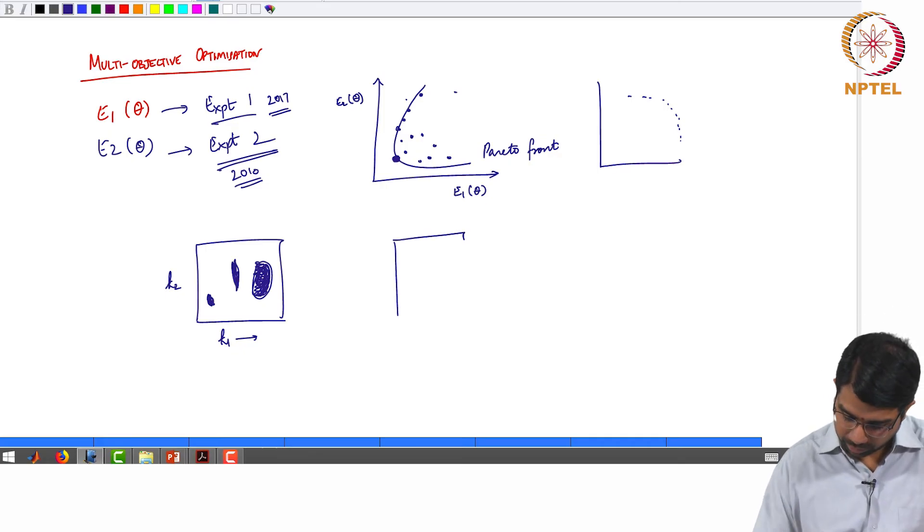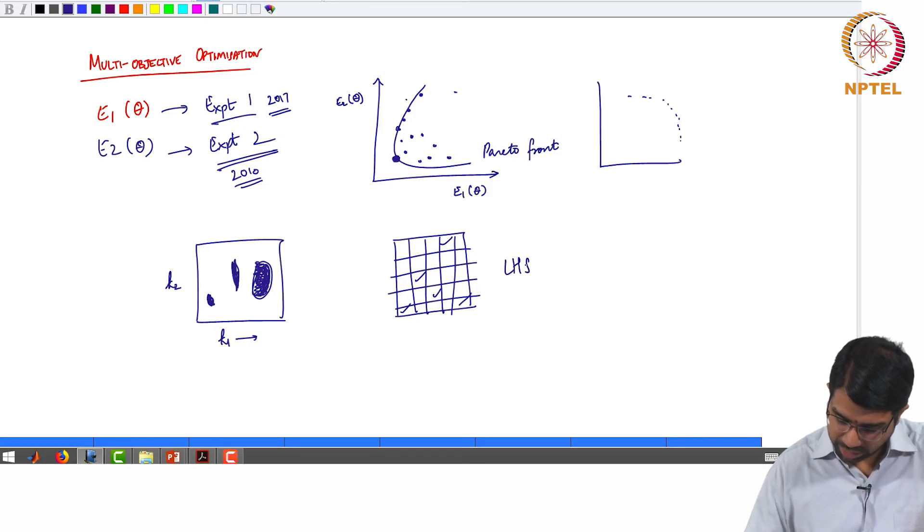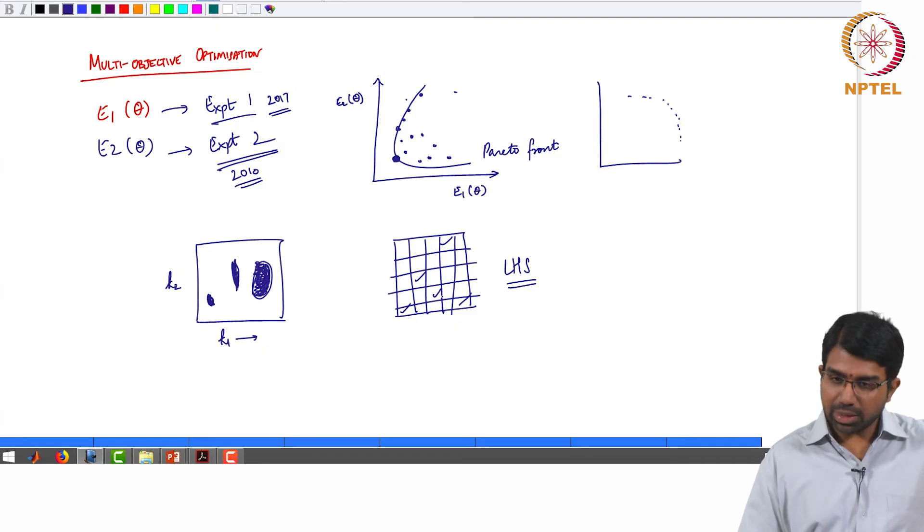So you may want to systematically uniformly sample across this using Latin hypercube sampling or one of those methods. You can read more about Latin hypercube sampling. There are many sampling strategies. So you may want to sample like this and figure out how the space looks.